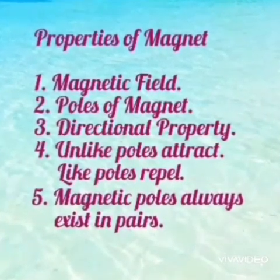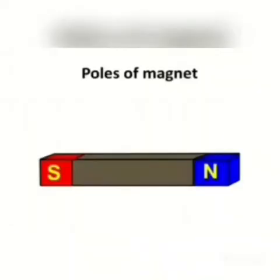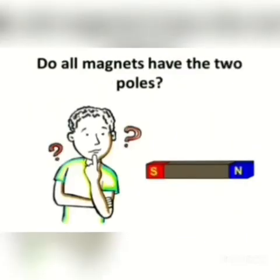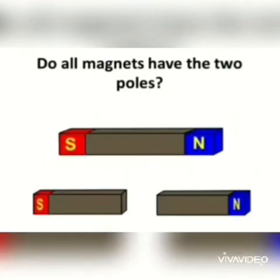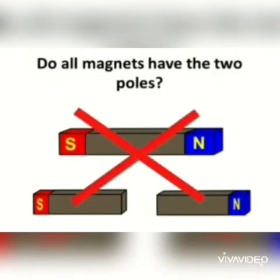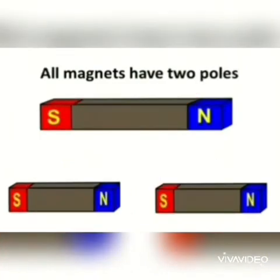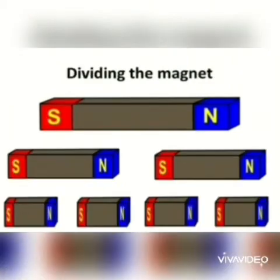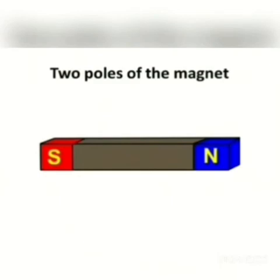5th property of magnet is: magnetic poles always exist in pairs. The two poles of a magnet cannot exist independently, that is why they always come in pairs. Magnet ka donoh pole hamesha pair mein rehta hai, koi bhi ek pole independently nahi reh sakta hai. If we cut or break a magnet into two pieces, we cannot isolate the north pole and south pole. Each piece behaves like a whole magnet, each having a north pole and a south pole.